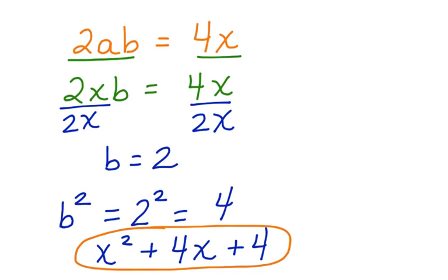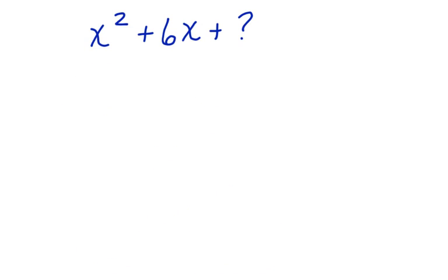Let's take a look at another one. x² + 6x + question mark. Again, we can write 2ab, the middle term of the form of a perfect square trinomial, is equal to 6x. 6x is the second term in this trinomial. a is still equal to x, so we can substitute that in.